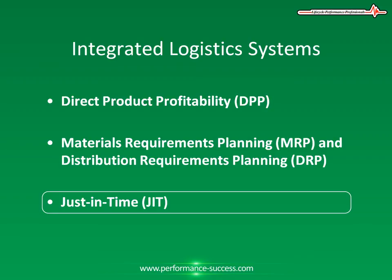The objectives of JIT are vitally linked to distribution and logistics, including the production of goods the customer wants, the production of goods when the customer wants them, the production of perfect quality goods, and the elimination of waste — meaning labor, inventory, movement, and space. There are a number of JIT techniques used to greater or lesser extent by the generally large companies that have adopted the JIT philosophy.